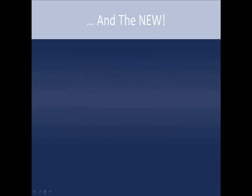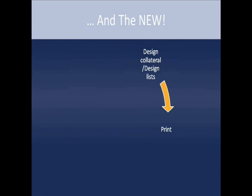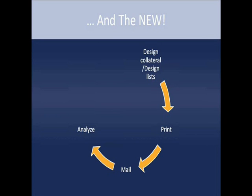Here's the new approach I'm proposing. We design the collateral and the list at the same time. We design the list because we want to know who is going to receive this piece of collateral while we design it — while we think of the content, the message, and the images, we should know who these people are. We need to be deliberate about doing that simultaneously. Then we look at the numbers every single time, measure them, analyze them, make improvements, stop sending to people who didn't respond, and send more to those who did.